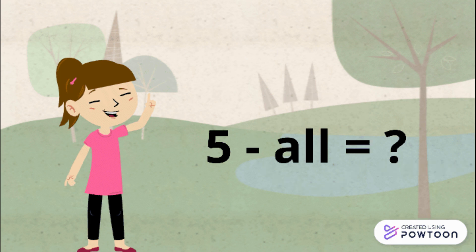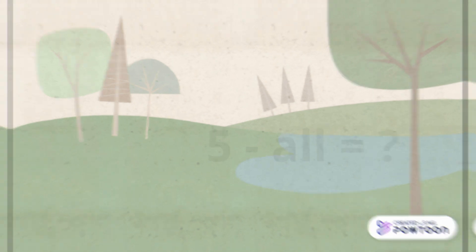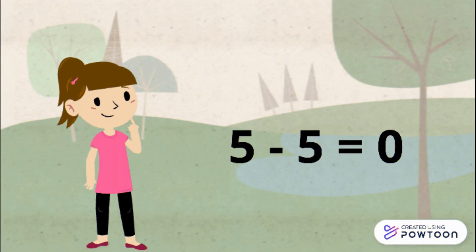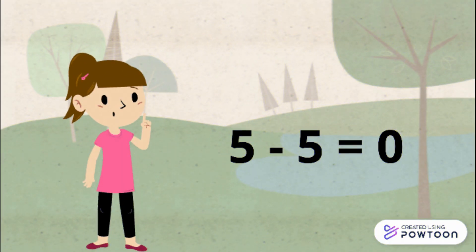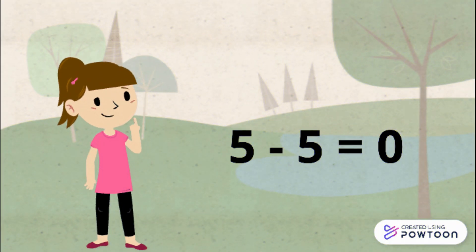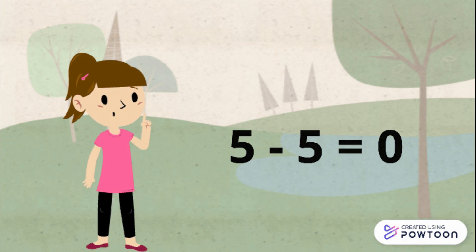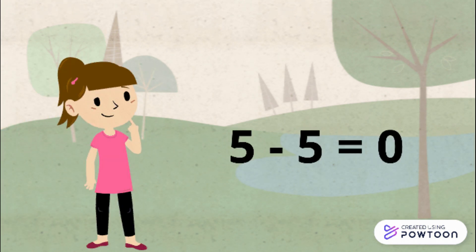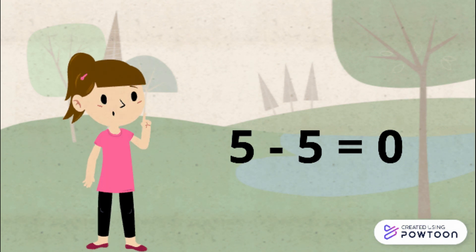Because all means everything. Therefore, five minus five equals zero. Since all of Lily's dogs walked away, now she has zero dogs left.